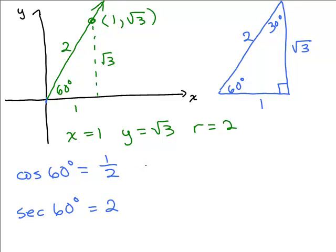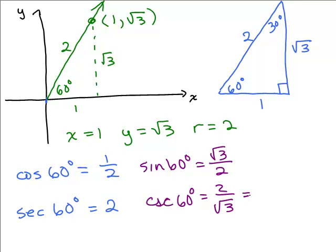How about the sine? The sine of 60 degrees. That will be the Y value over the R. So that will be square root of 3 over 2. So the cosecant will be the reciprocal, 2 over square roots of 3. And if you rationalize that, you get 2 square roots of 3 over 3.